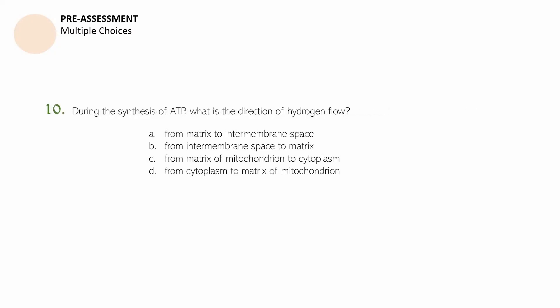Question number ten: During the synthesis of ATP, what is the direction of hydrogen flow? A. From matrix to intermembrane space. B. From intermembrane space to matrix. C. From matrix of mitochondrion to cytoplasm. D. From cytoplasm to the matrix of mitochondrion. Pause this video if you need more time.